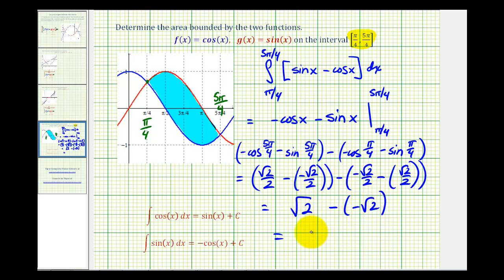So the total area of the bounded region would be two square root two square units.